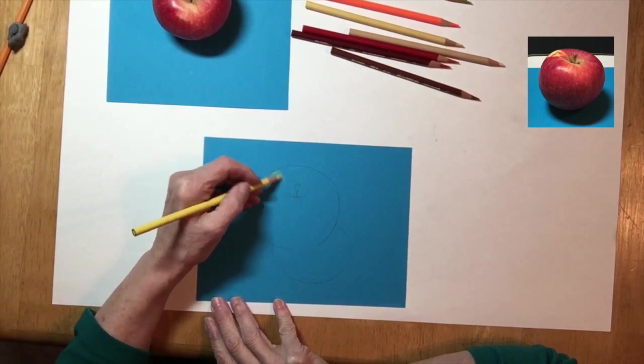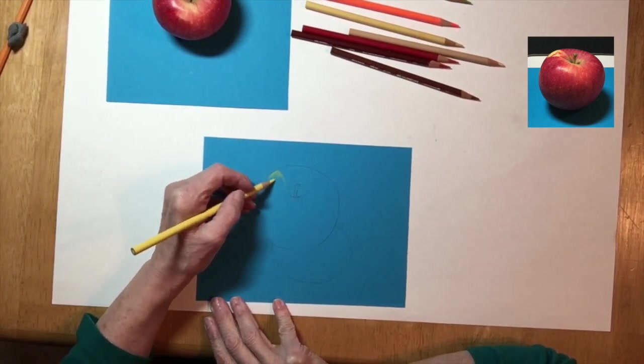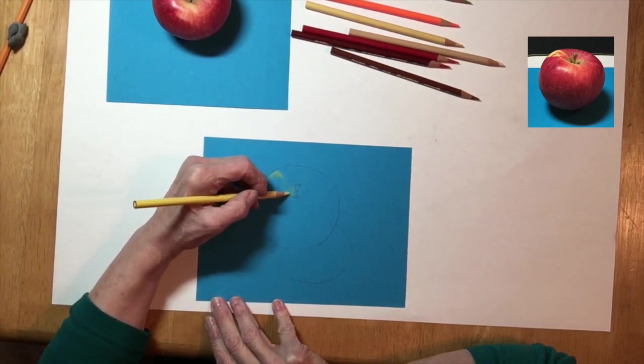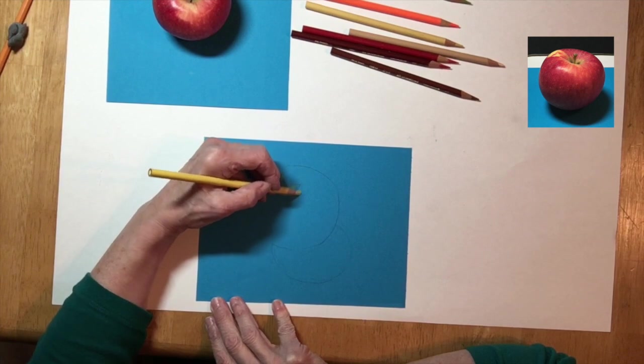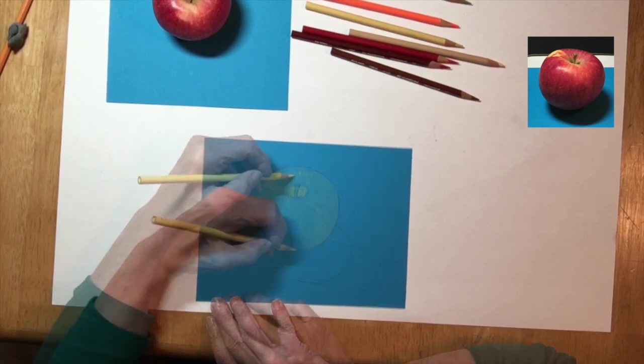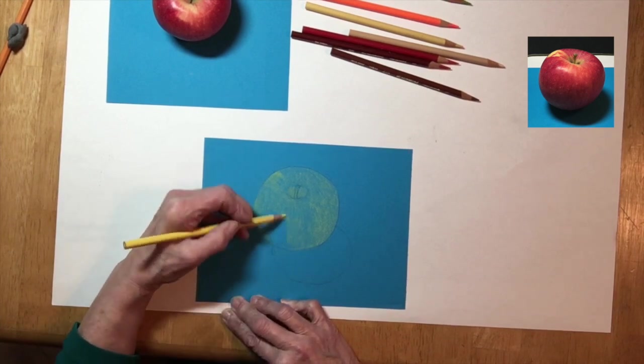I like to start with some of the lighter colors first. Although in Prismacolor you can draw light on top of dark, you will never achieve complete coverage with the light pencil.